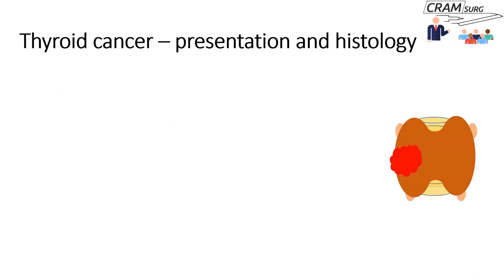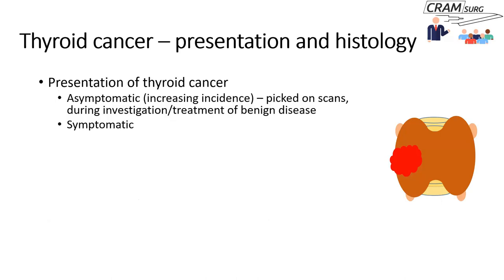It's always good to talk about these things with examples that surgical and medical trainees can relate to. I'm going to use thyroid cancer as an example and focus on two aspects. One is presentation — you could divide thyroid cancer patients' presentation into asymptomatic or symptomatic groups. Asymptomatic thyroid cancer is on the increase, picked up on scans for unrelated conditions or during investigation of benign disease such as Graves' disease or multinodular goiter, and we also have the category of symptomatic patients presenting with a lump, dysphagia, or breathing problems.